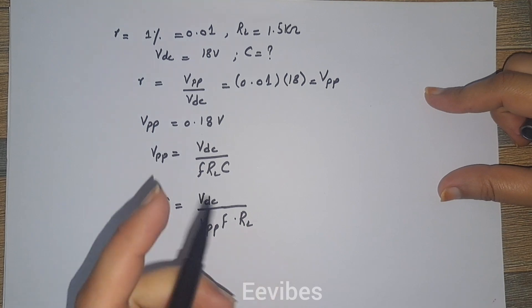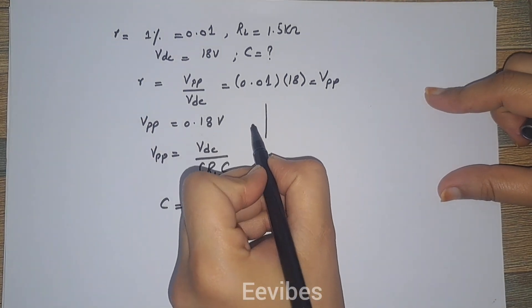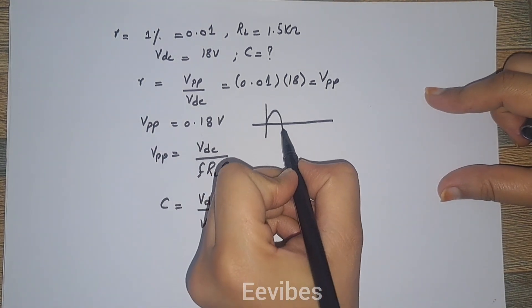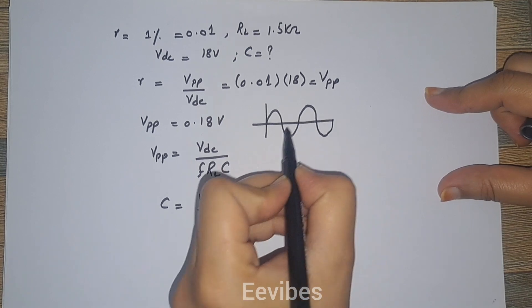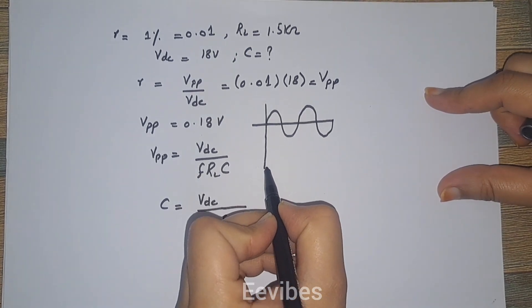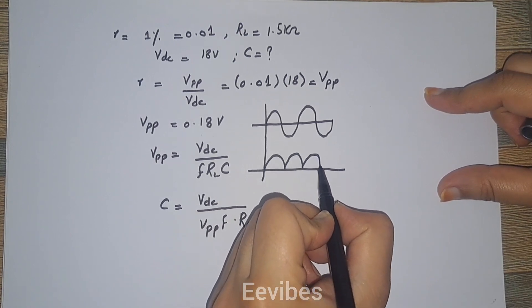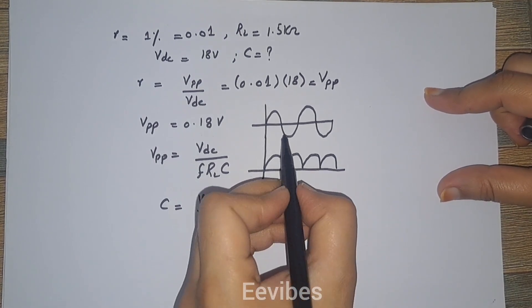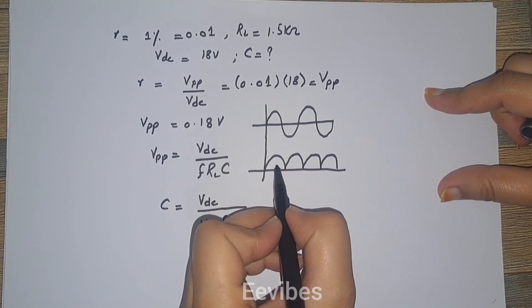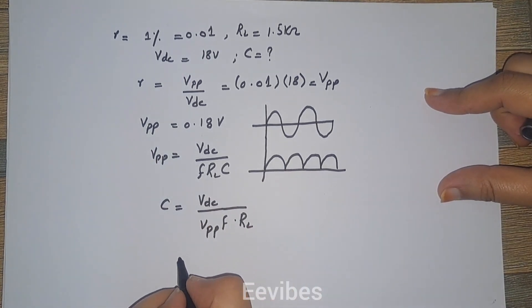Since it is a full wave rectifier, in case of the full wave rectifier we know that the frequency of the output voltage is equal to twice the frequency of the input signal, because for each cycle we actually get the rectified output voltage. So that's why you can see two cycles are obtained in case of the full wave rectifier.